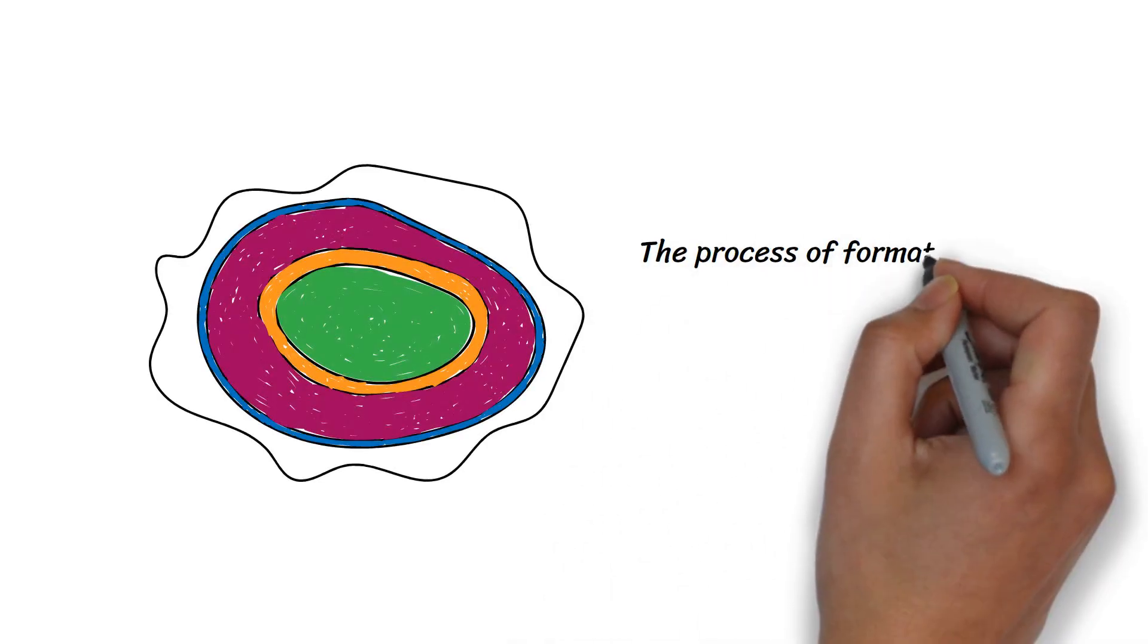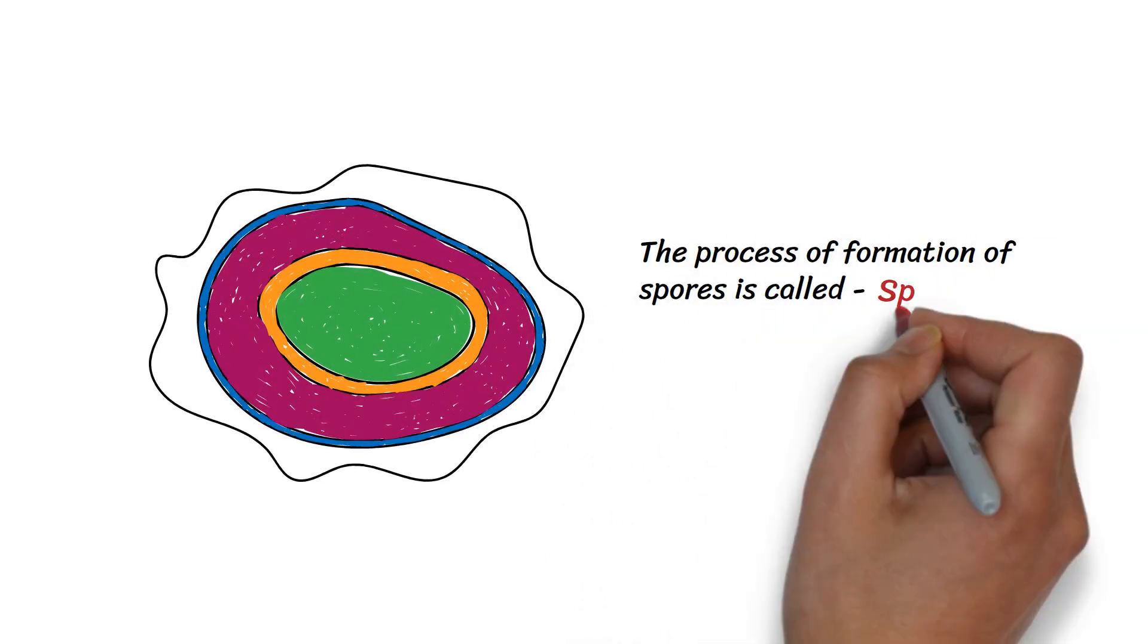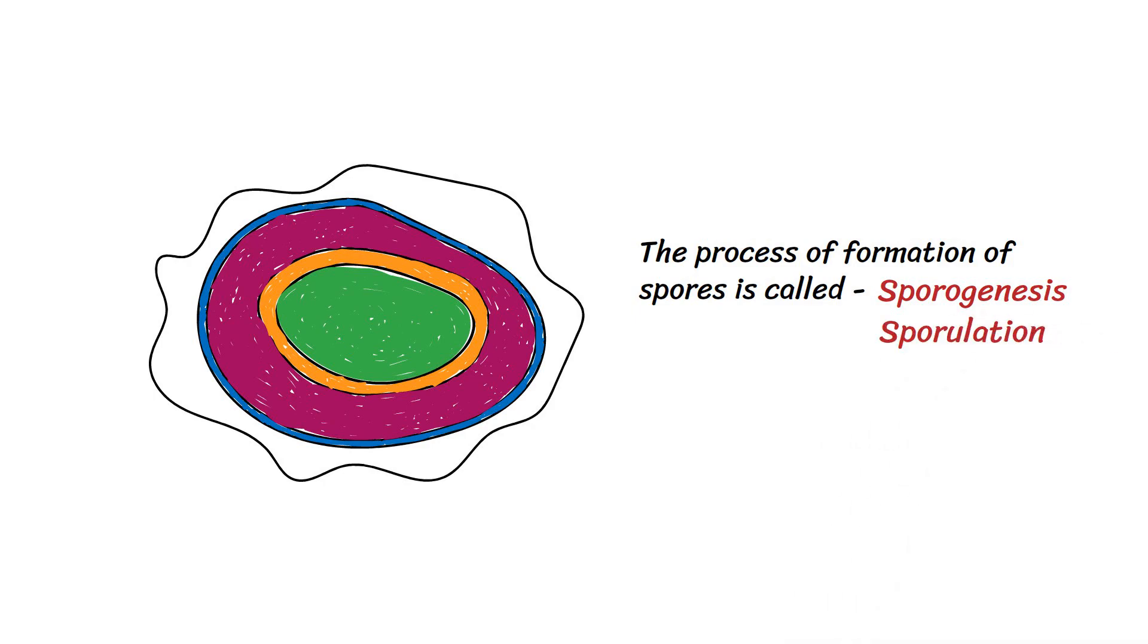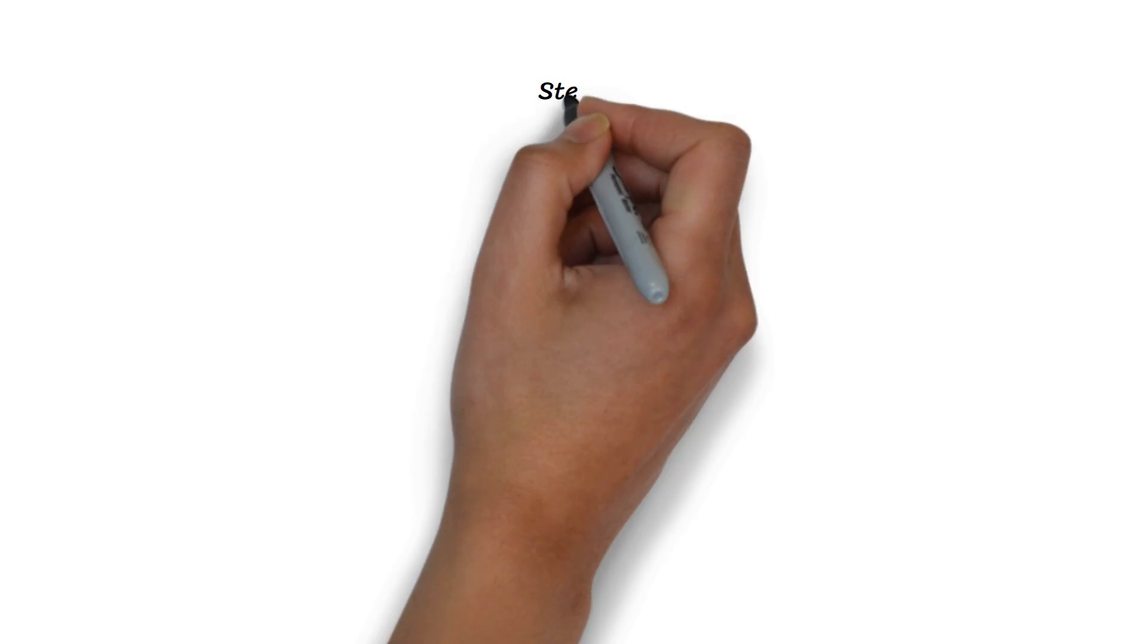The process of formation of spores is called sporogenesis or sporulation. As we discussed earlier, the sporulation process is triggered when growth ceases due to lack of nutrients. In step 1 of this process, an axial filament of bacterial DNA is formed.